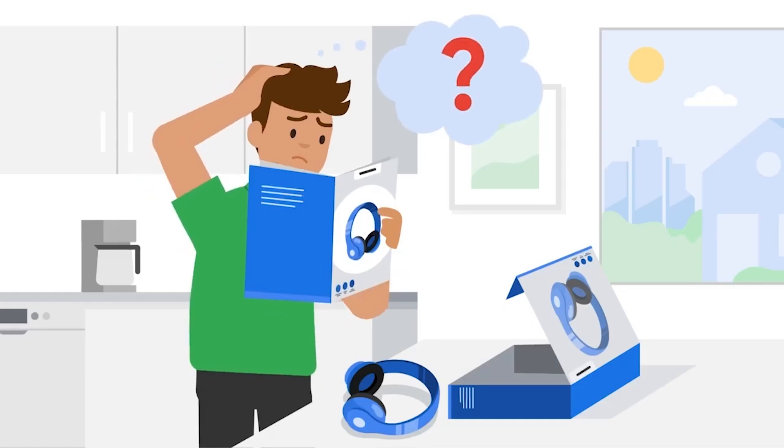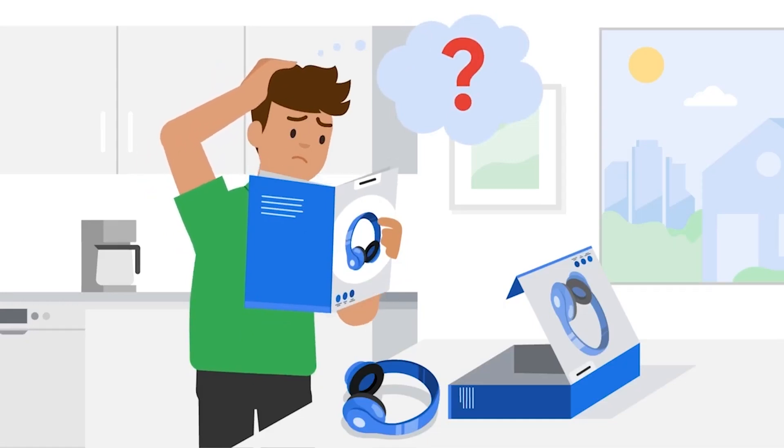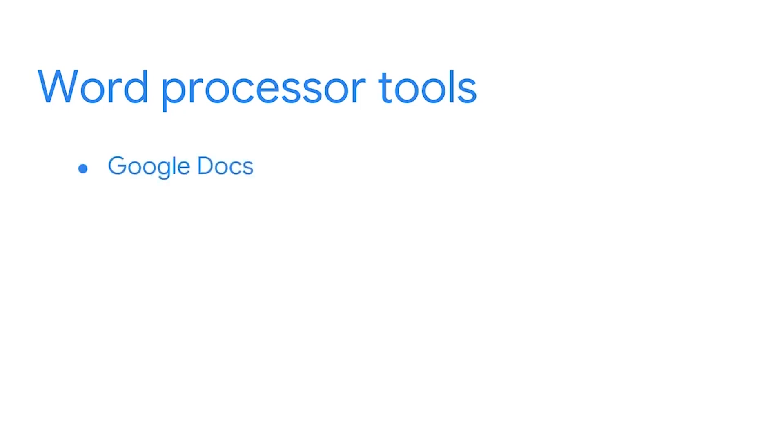Have you ever consulted a product manual for help and found yourself confused with the instructions and unable to get the help you needed? Whether it's had to do with unclear visuals and instructions or a confusing layout, you weren't able to use the documentation to solve your issue — this is an example of ineffective documentation. Effective documentation reduces uncertainty and confusion, which is critical during a security incident when tensions are high and urgent response is required.